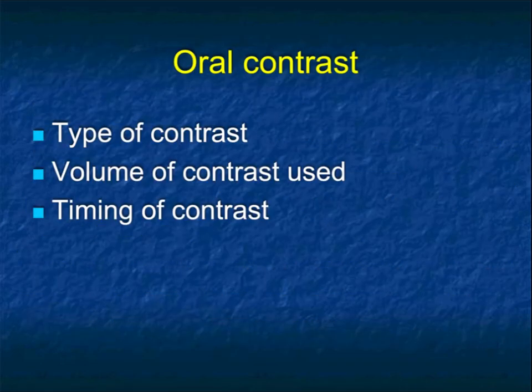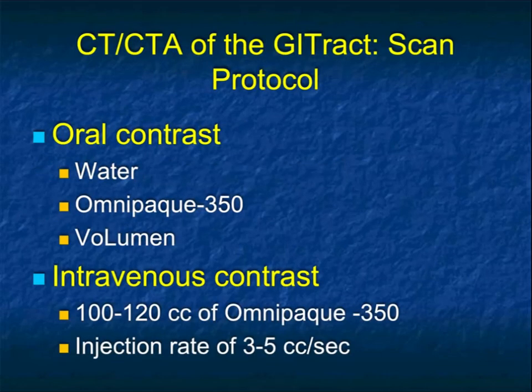We need to give contrast. The question then becomes: what type? When you think about oral contrast — what's the volume, timing, and type? We can think of oral contrast as three things: water as a neutral agent, Omnipaque 350 as a positive agent, and Volumin, which is a neutral agent used less frequently now. And then of course we'll talk about IV contrast.